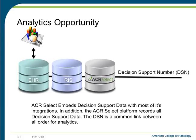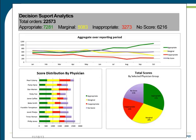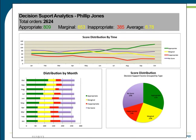For every decision support session, a unique decision support number is generated. ACR Select embeds this data inside of the EMR to document the impact of appropriateness on the overall patient care cycle. This decision support number can be recorded in every healthcare IT platform involved in the imaging cycle and be used by all stakeholders to link together decision support data. Here's an example of how those analytics can be used — showing score distributions by physicians over time and how imaging appropriateness for a physician population has been improved over the period from January to October. Each individual physician can then be queried to determine their specific behavior.